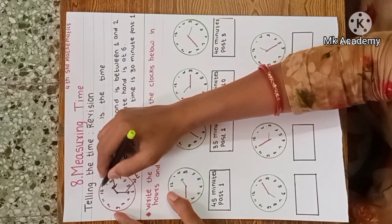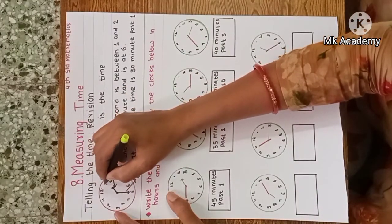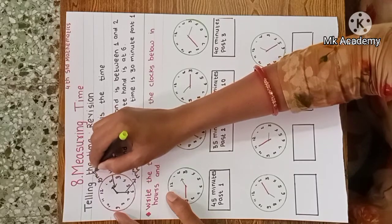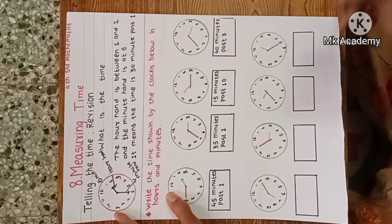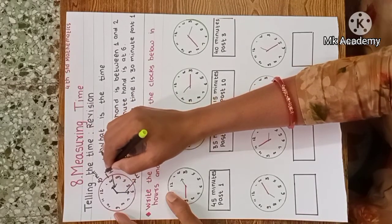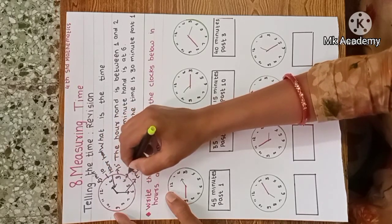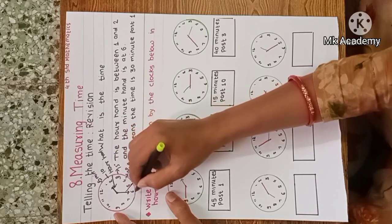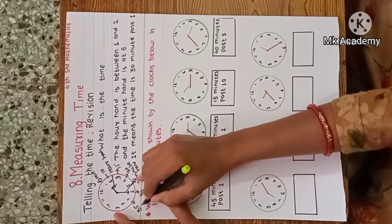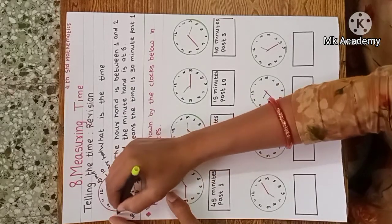There are 12 numbers on this clock, from 1 to 12, and there is a difference of 5 minutes between each number. So from 12 to 1 is 5 minutes. Using the 5 times table: 5×1=5, 5×2=10, 5×3=15, 5×4=20, 5×5=25, 5×6=30, 5×7=35, then 40, 45.